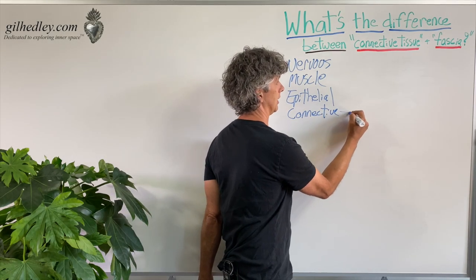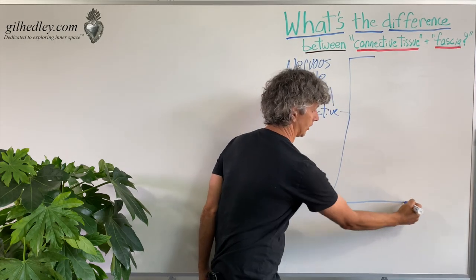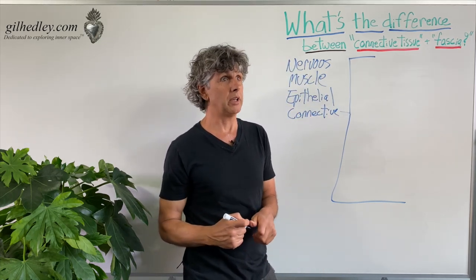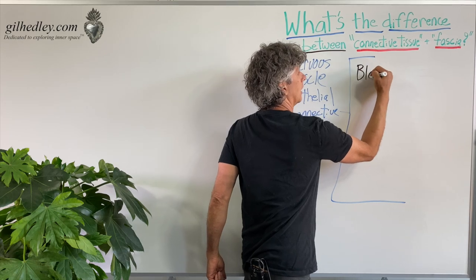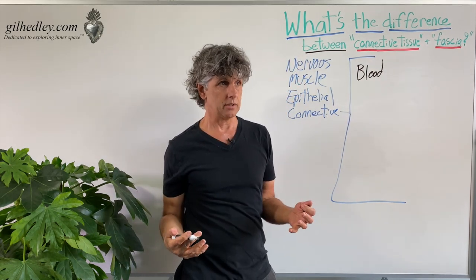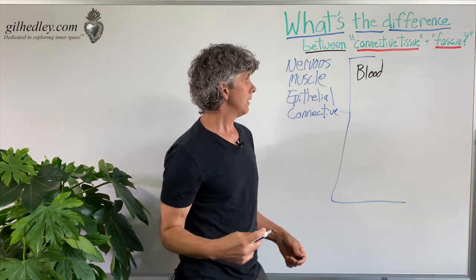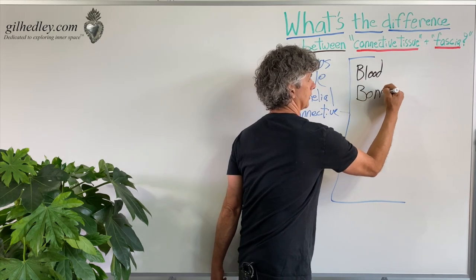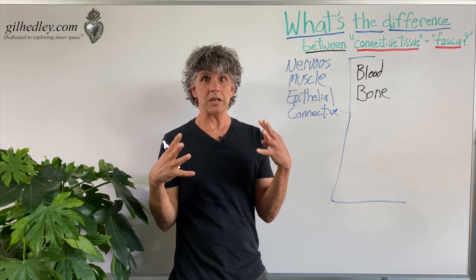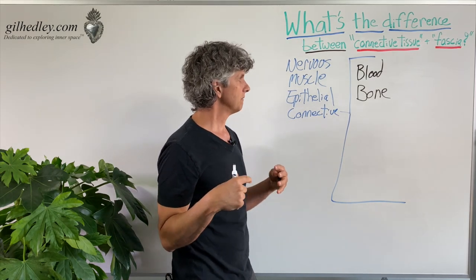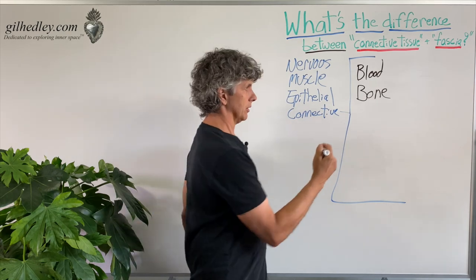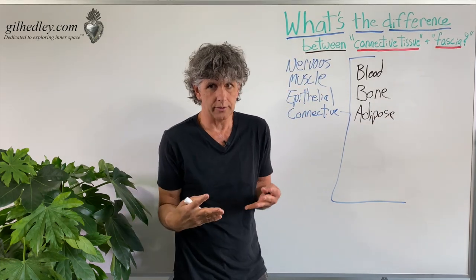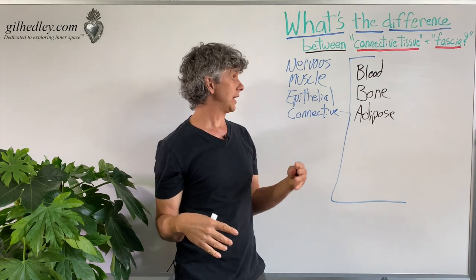If we go to connective tissue and branch out on that one, there's a whole lot of other tissues in the body that get classified as connective tissue. Believe it or not, blood is connective tissue — it's full of fibers, that's how it coagulates or clots. Bone is connective tissue — it's a fibrous matrix with crystals embedded on it to make it hard. And adipose, believe it or not — adipose and bone and blood are all in the same grand tissue category of connective tissue.